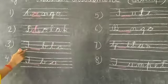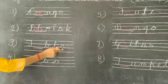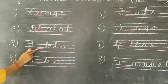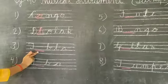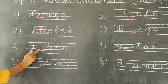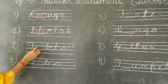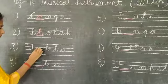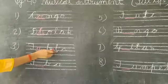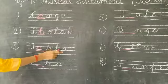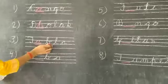Now next, number three: T-dash-B-L-A. Now students, tell me what will we come here? Yes, you are right — A. T-A-B-L-A. Tabla. T-A-B-L-A. Tabla. Now next, number four.